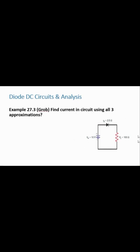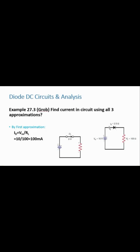Let's solve an example using the ideal diode model. Given a circuit, step one is determining if the diode is forward or reverse biased. Since the positive terminal is connected to the positive side of the diode, it is forward biased. We replace the diode with a closed switch and use the equation V_bias = I_d × R_L to find the current I_d. Different notations are used in different textbooks, but the concepts remain the same.